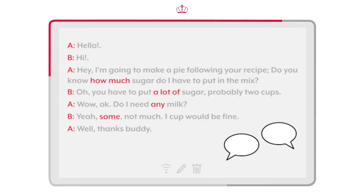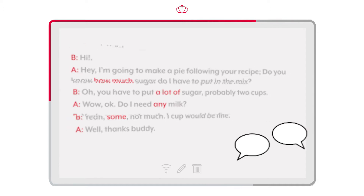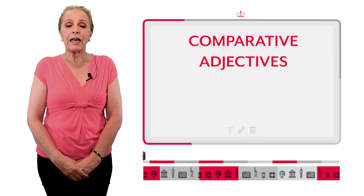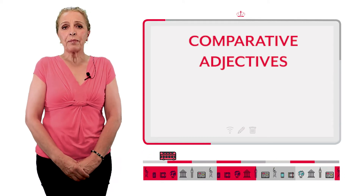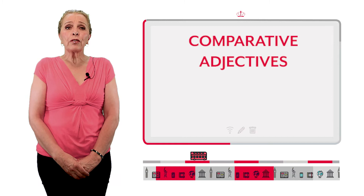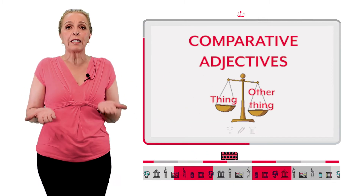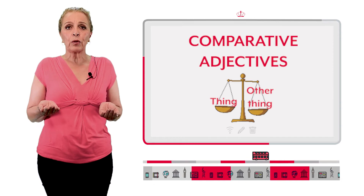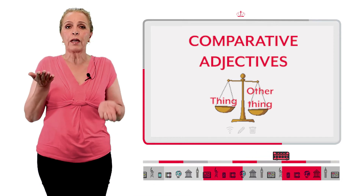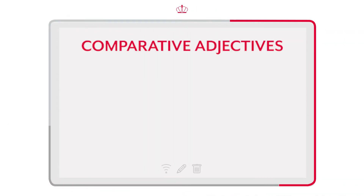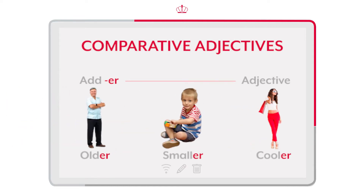Now you know how to use the countable and uncountable nouns. Now we are going to learn about comparative adjectives. We use comparatives when we want to compare one thing from the other. Utilizamos los comparativos cuando queremos comparar una cosa sobre la otra. In order to use it, we just have to add '-er' to the adjective. Para usarlo, solo tenemos que agregar '-er' al final del adjetivo. For example: older, smaller, cooler.